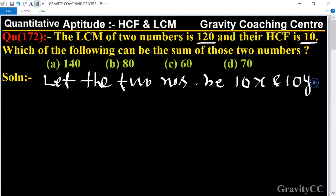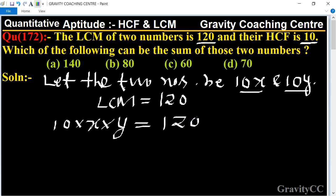LCM is also given. LCM equals 120. And the LCM of 10x and 10y is 10 times x times y equals 120. Zero zero cancel, so the product of xy equals 12.